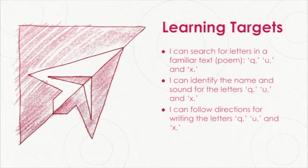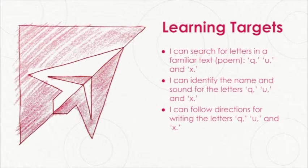There are three learning targets for our lesson today. The first target says I can search for letters in a familiar text or poem — Q, U, and X. Our second target says I can identify the name and sound for the letters Q, U, and X. And our last target says I can follow directions for writing the letters Q, U, and X.